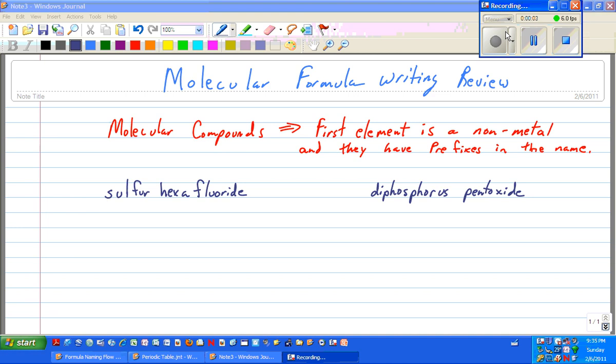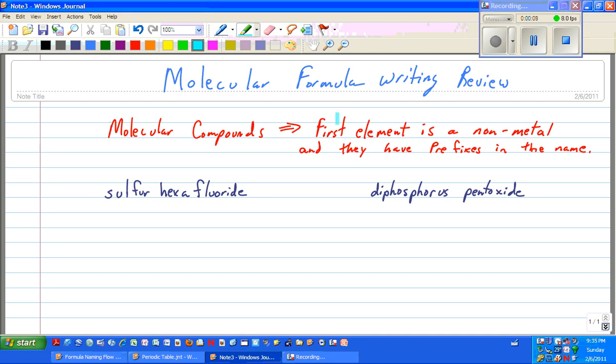The other type of compound we've taken a look at writing formulas for is a molecular compound. The way we recognize a molecular compound is that the first element is going to be a non-metal. In addition to that, the other visual clue we can take a look at is there are prefixes in the name.